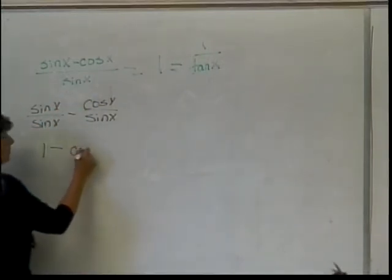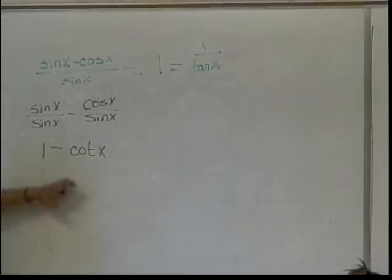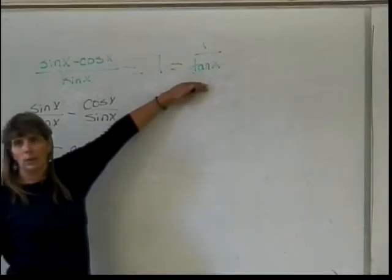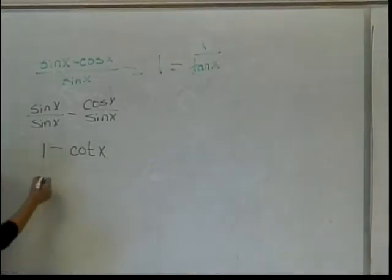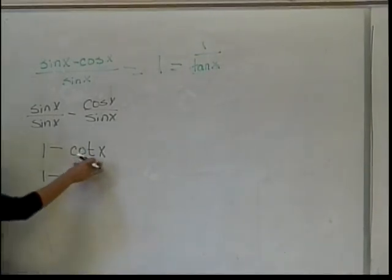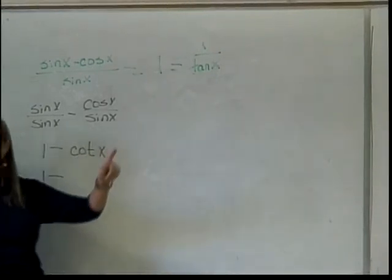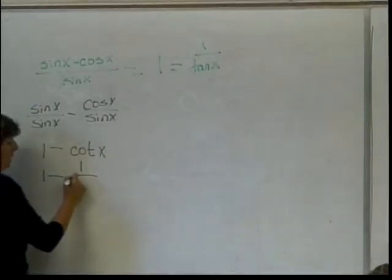It's the cotangent. Am I done yet? No, because I still don't look quite like the right side. So, the one part's good. I want to keep that. Cotangent of x. Is there another way to write it so that I can end up looking like that? One over the tangent of x.